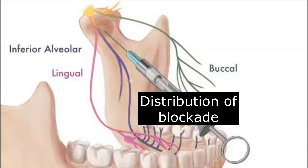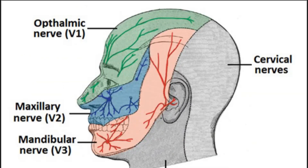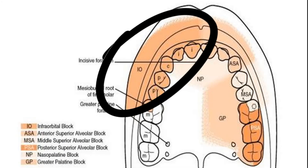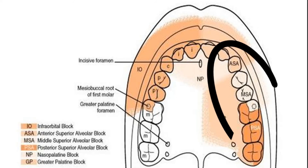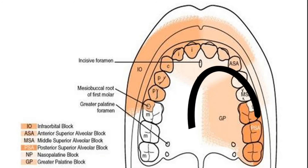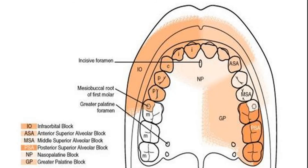You can see the distribution of the inferior alveolar blockade in blue, the lingual in pink, and the buccal in green. With blockade, it is always important to know the distribution — you need to know what you're going to block. Here we can see the infraorbital block on the upper lip area, and the anterior, middle, and posterior superior alveolar block depending on tooth placement, the nasopalatine block at the incisive foramen, and the greater palatine block next to the canal.